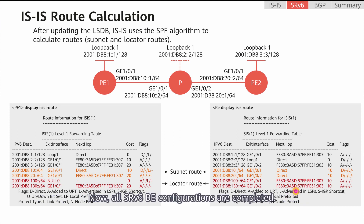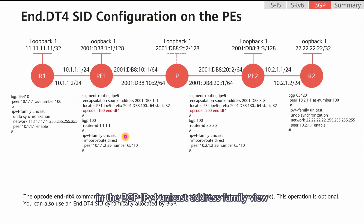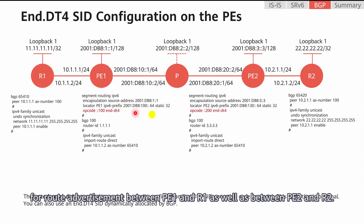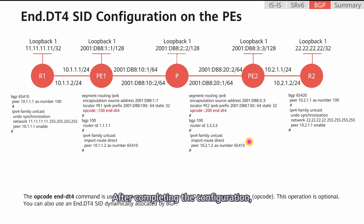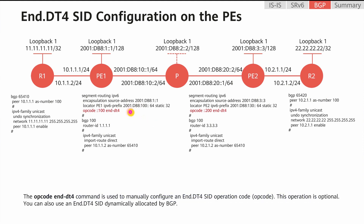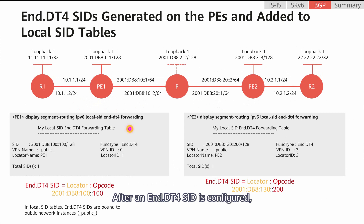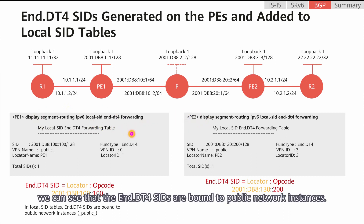Now, all SRv6BE configurations are completed. Next, let's see how to configure BGP. We should first configure eBGP peer relationships in the BGP IPv4 unicast address family view for route advertisement between PE1 and R1, as well as between PE2 and R2. After completing the configuration, run the opcode End.DT4 command to configure an SRv6 End.DT4 seed. This operation is optional; you can also use an End.DT4 seed dynamically allocated by BGP. After an End.DT4 seed is configured, it is added to the local seed table. In the local seed tables on PE1 and PE2, we can see that the End.DT4 seeds are bound to the public network instances.